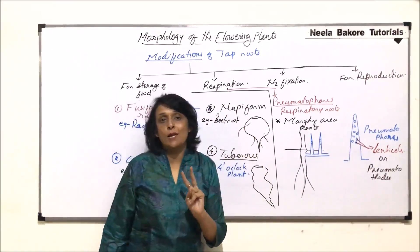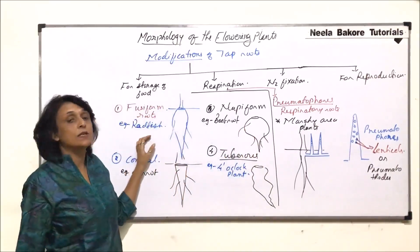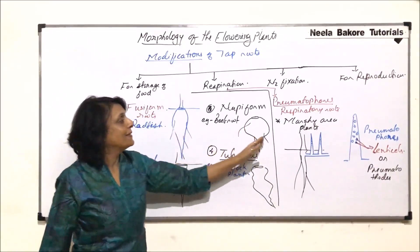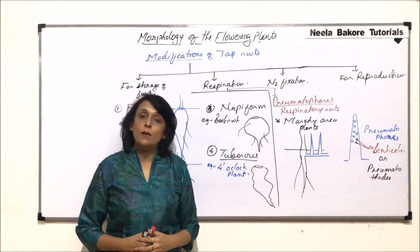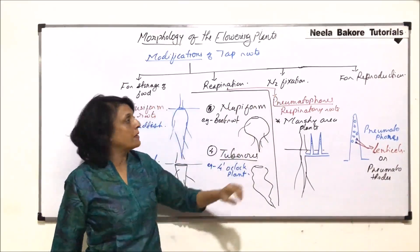So we have talked of two types of modifications. One is for storage of food and the second one is for respiration. Now, in the next part, we will take up two more modifications. That is for nitrogen fixation and how do these tap roots help in reproduction.